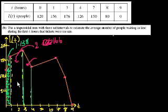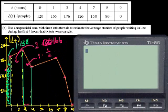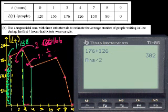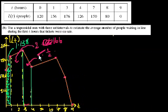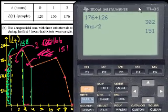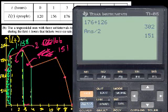And finally, what's the area of this last trapezoid? The base is 1 — it goes from 3 to 4. The average value is between 176 and 126. Let me use a calculator. 176 plus 126 divided by 2 is 151. So this area is 1 times 151, or 151. The total area is the sum of the three trapezoids: 138 plus 2 times 166 plus 151.